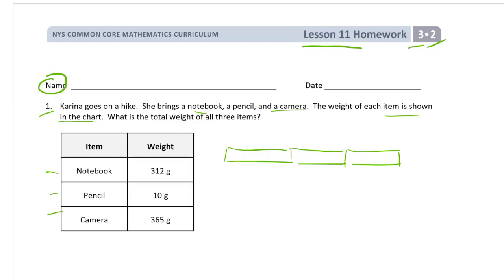Our weight in grams, right? So this is 312 grams, then we have the pencil 10 grams, the camera 365 grams. And I'm going to label them N for notebook, P for pencil, C for camera. So we want to find what it is from end to end there. And here's how I'm going to do it. I'm going to use vertical addition. 2 plus 0 plus 5 is 7. 1 plus 0 plus 6 is 8, and 3 plus 3 is 6.